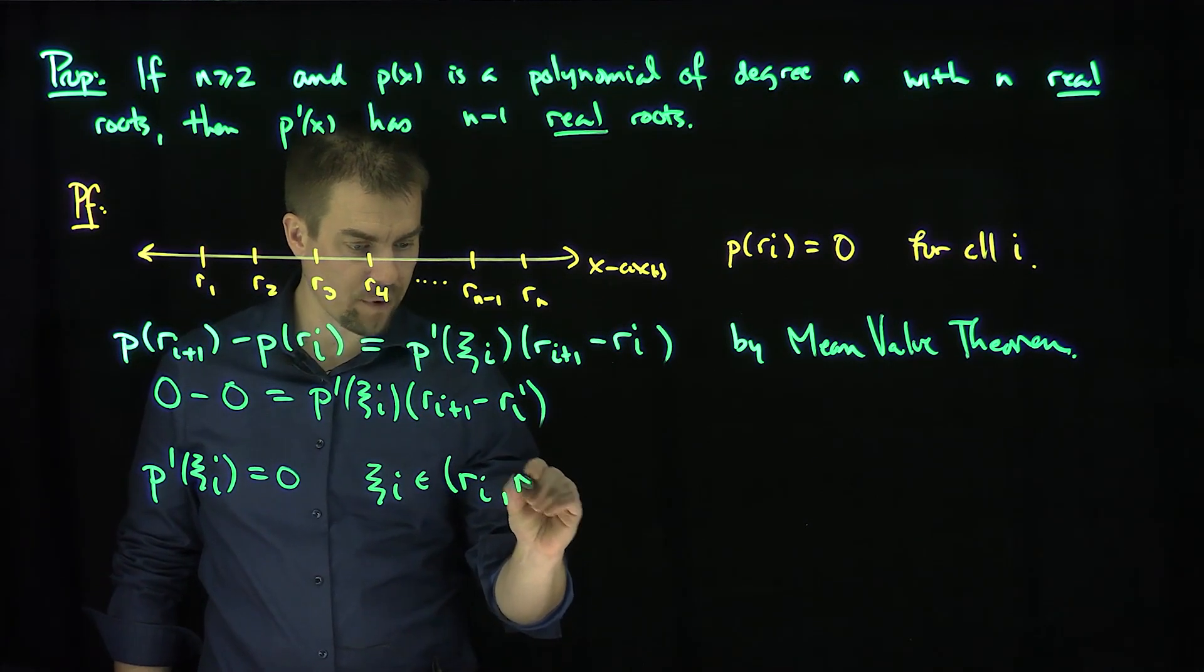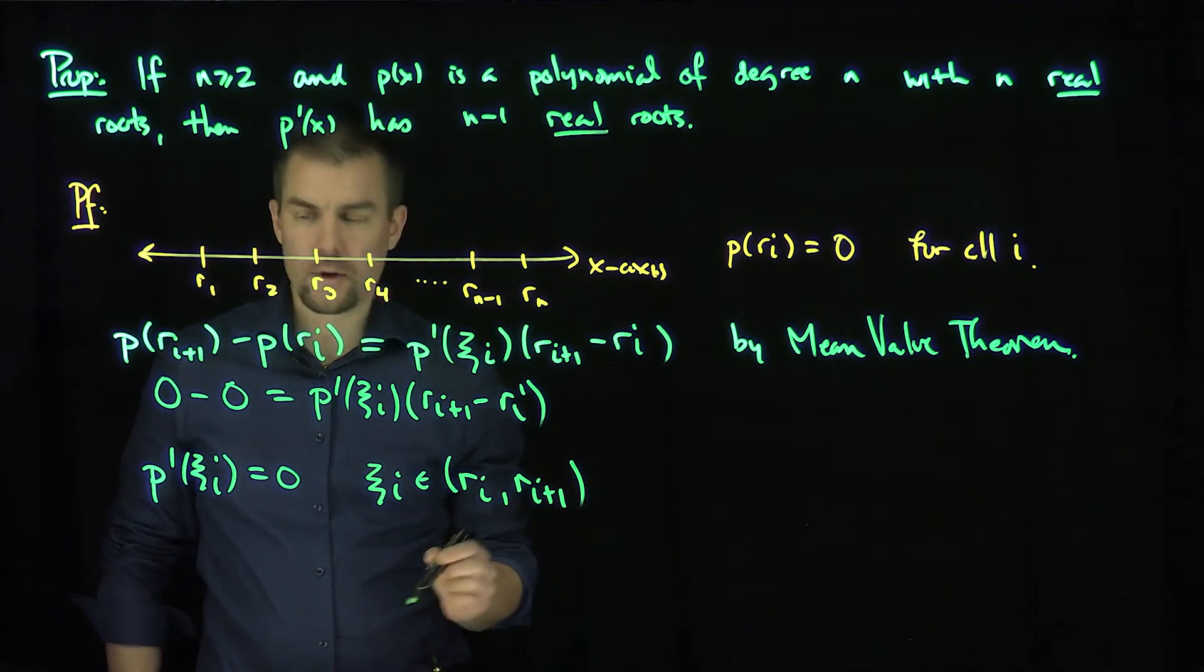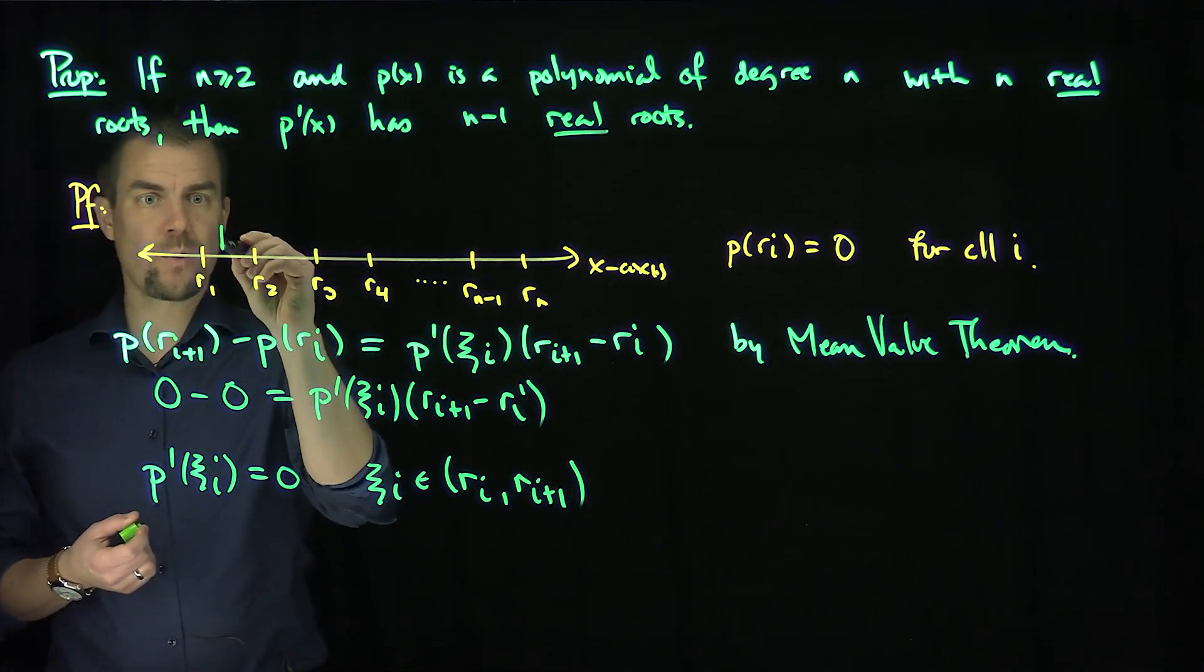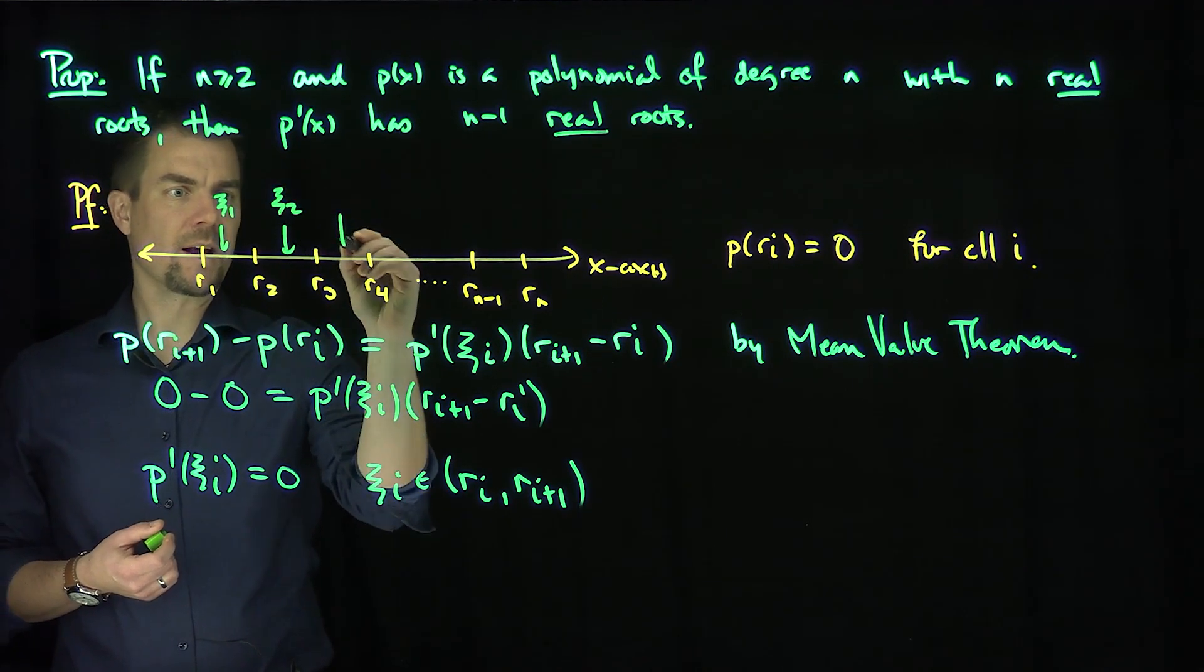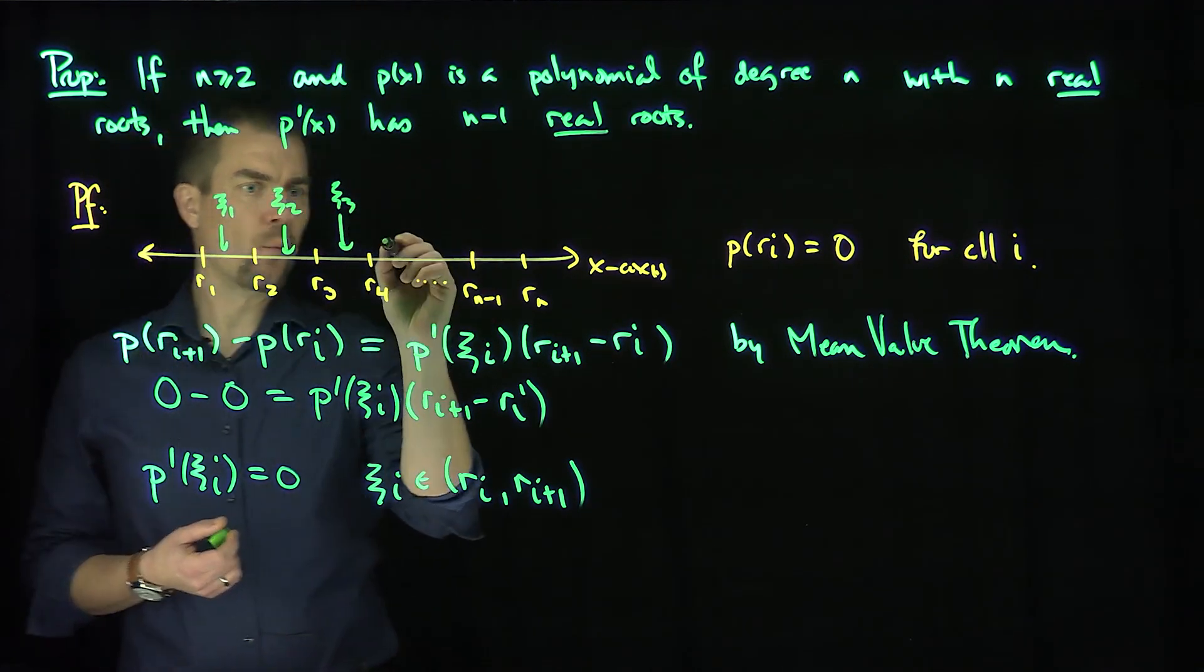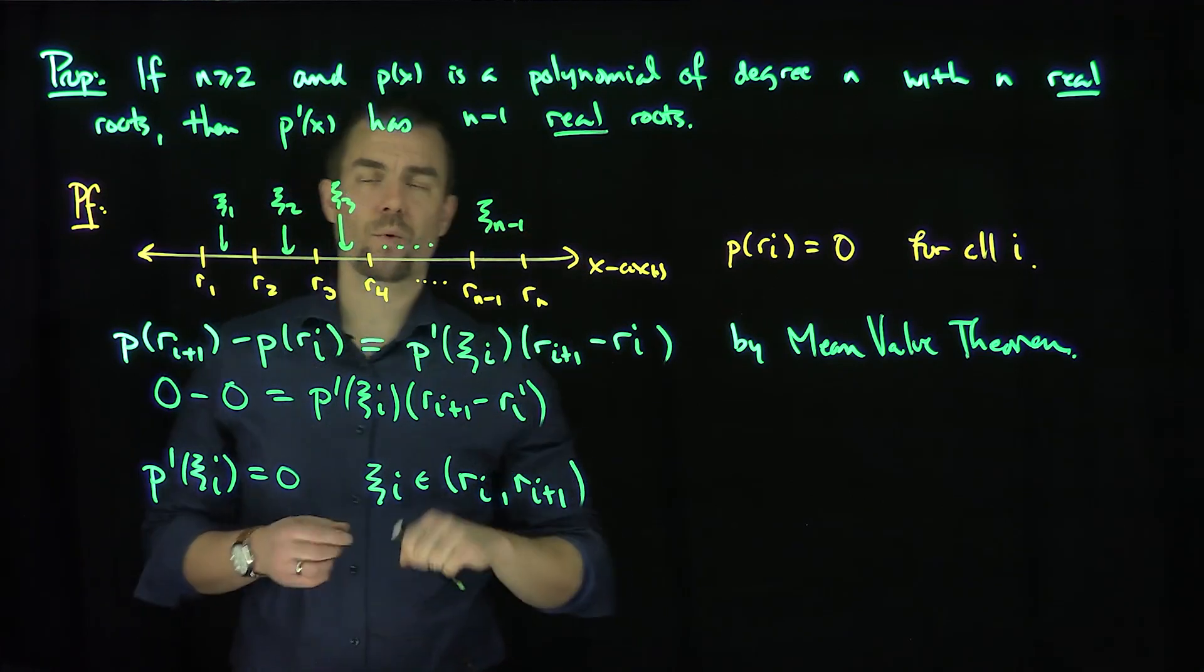Ri and then r(i+1). So in other words, let's figure out where those xi are. So x1 is over here, x2 is over here, x3 is over here, and way down over here we have x(n-1).